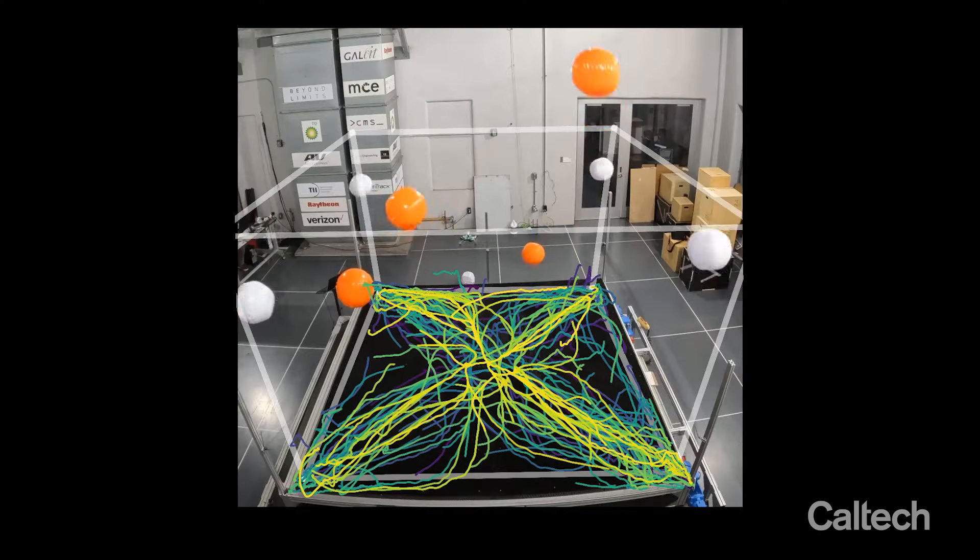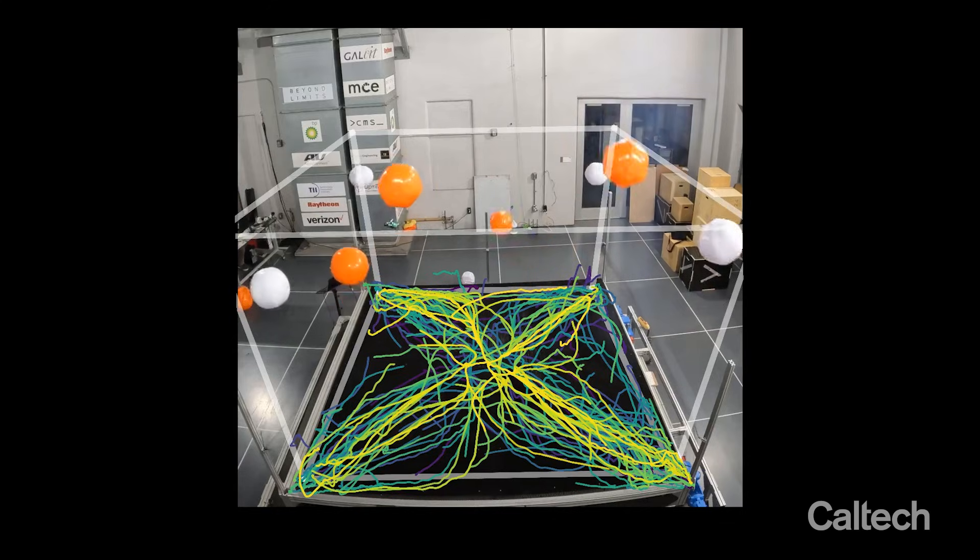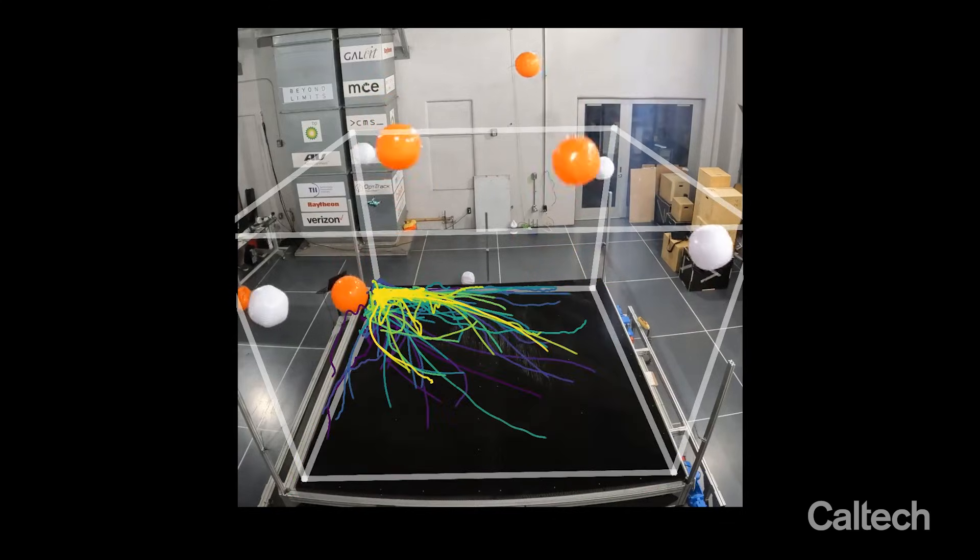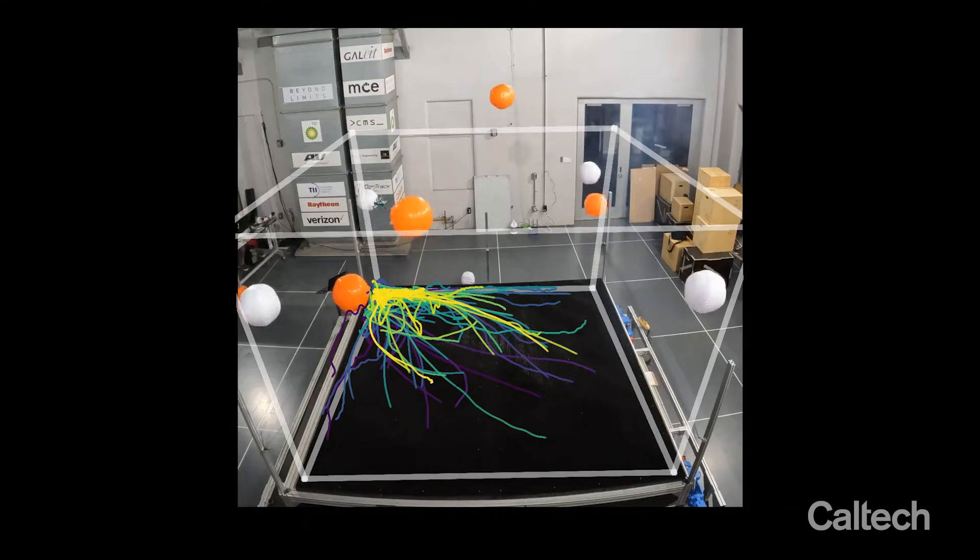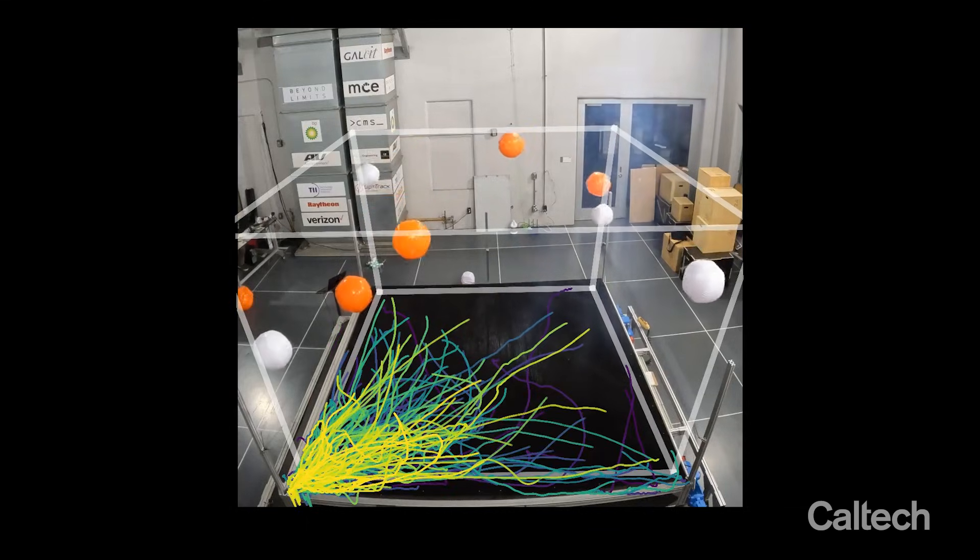In this experiment, our algorithm is tasked to guide a quadrotor to observe four targets, shown in white, while avoiding obstacles, shown in orange, and dangerous thermals, which are modeled with deep neural networks.